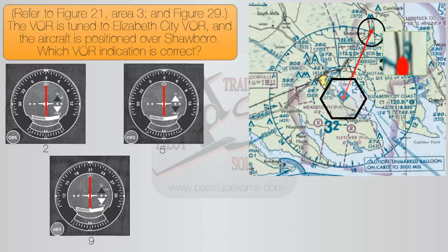All we need to do now is find a VOR flag that points to 210, since the needle is centered. If we look at figure 5, we can clearly see that the flag points directly to 030, which would eventually get us to the station — but you probably do not have enough fuel to circumnavigate the globe. The same is for figure 9, where again, following the flag, we find 030 as a heading to the station. Finally, if we look at figure 2, we can see that the flag points to 210, south-south-west, and that is exactly the heading we need to fly to the VOR.